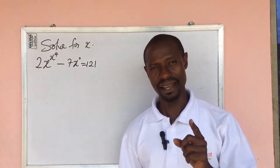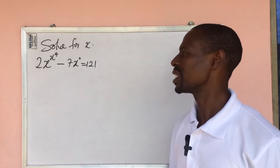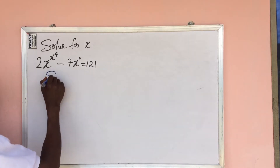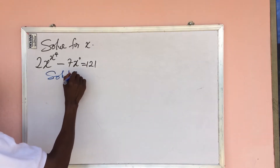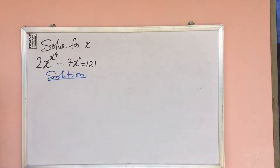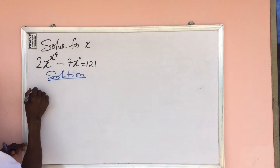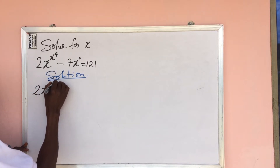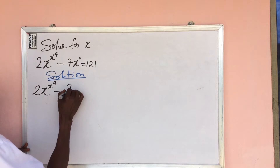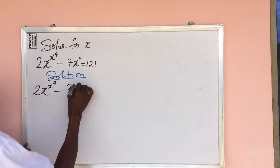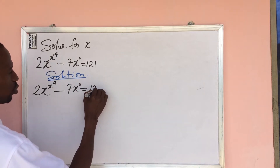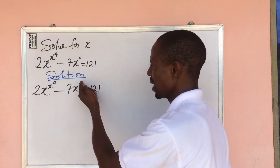So let's dive into today's challenge. We take our solution from here. Let's write down our equation, which is 2x to the power of x to the power of 4, minus 7 to the power — 7 times x to the power of 0 — equal to 121.